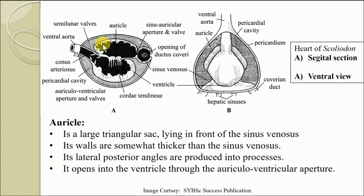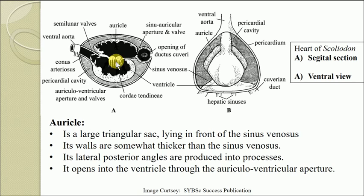The lateral posterior angles of the auricle are produced into processes that project laterally at the sides of the ventricle like ears, and it opens into the ventricle through the auriculoventricular aperture. This aperture is guarded by a bilabiate valve, whose function is to prevent backward flow of blood from the ventricle back into the auricle.